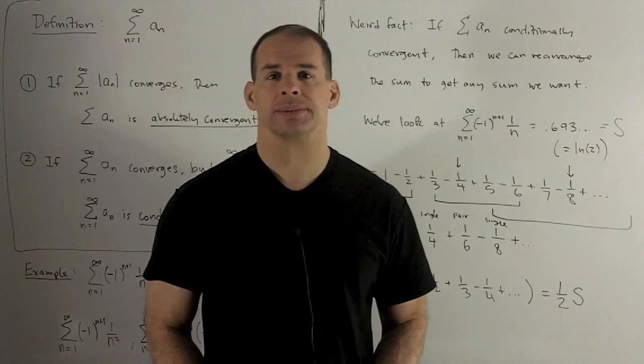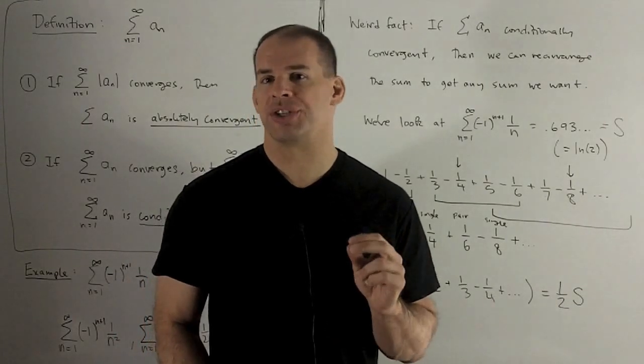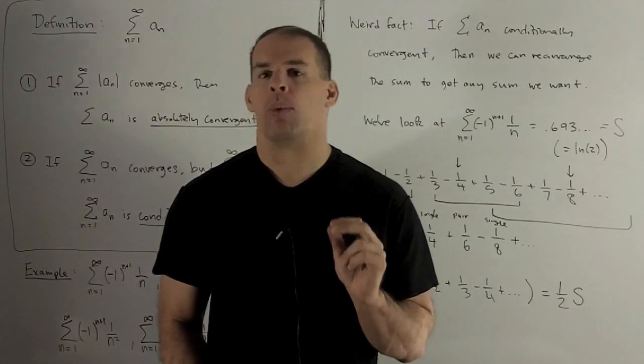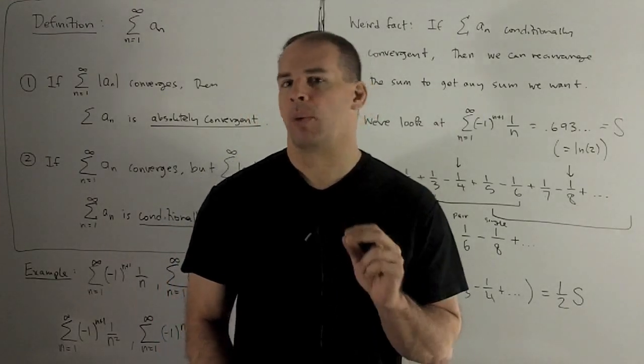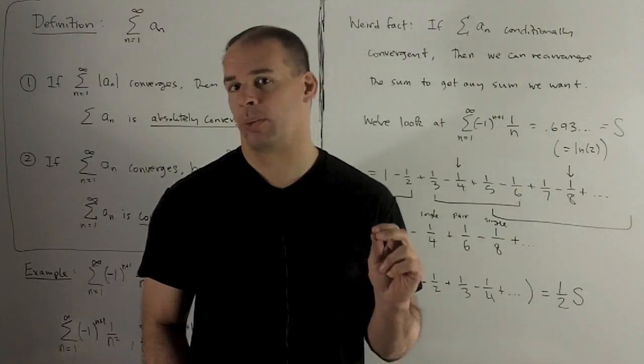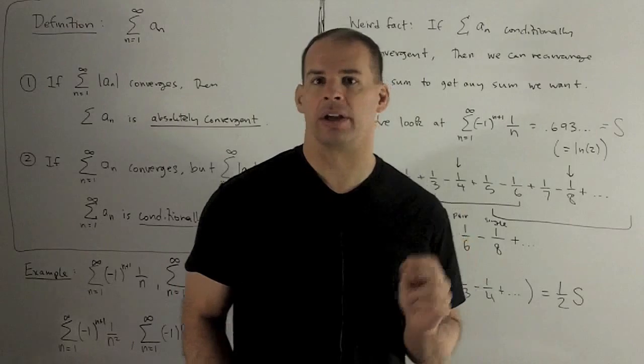So here's a weird fact. For conditionally convergent series, I can rearrange the terms of the series to get any sum that I want. So I won't show you how to do that, but I will show you that by rearrangement, I can get a sum that's different from the one we're expecting. So let's take a look at this.